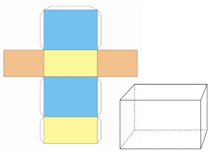If you guessed that this net makes a rectangular prism, you are correct. Let's see if we can find the sides that match. The front and back of this rectangular prism would be the blue sides. The top and bottom here and here would be the yellow ones.